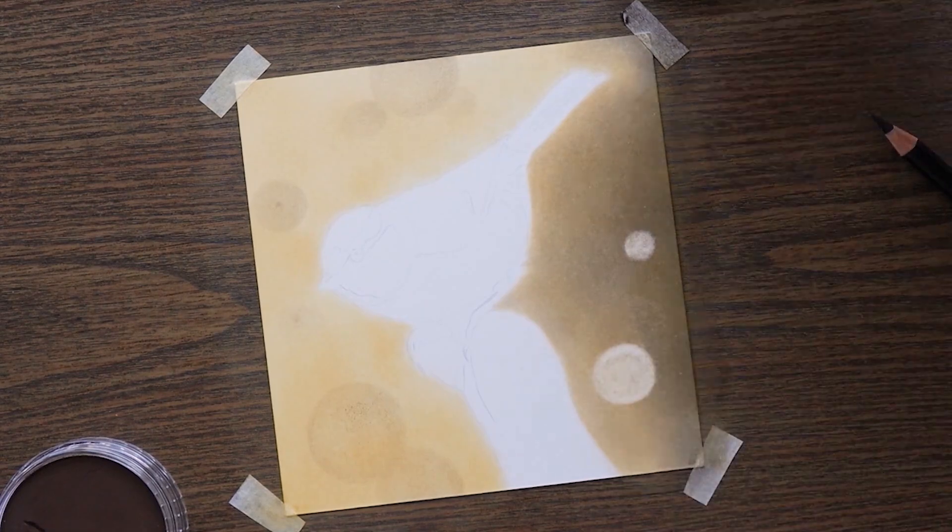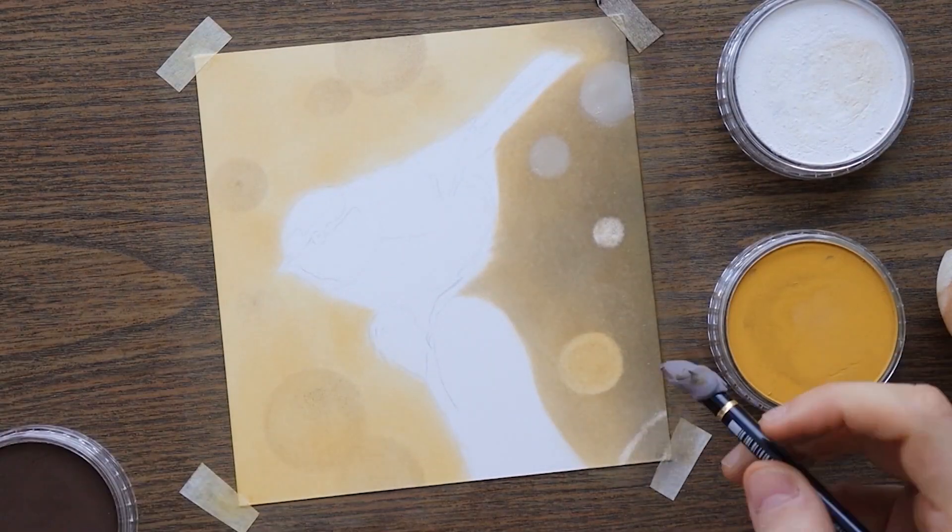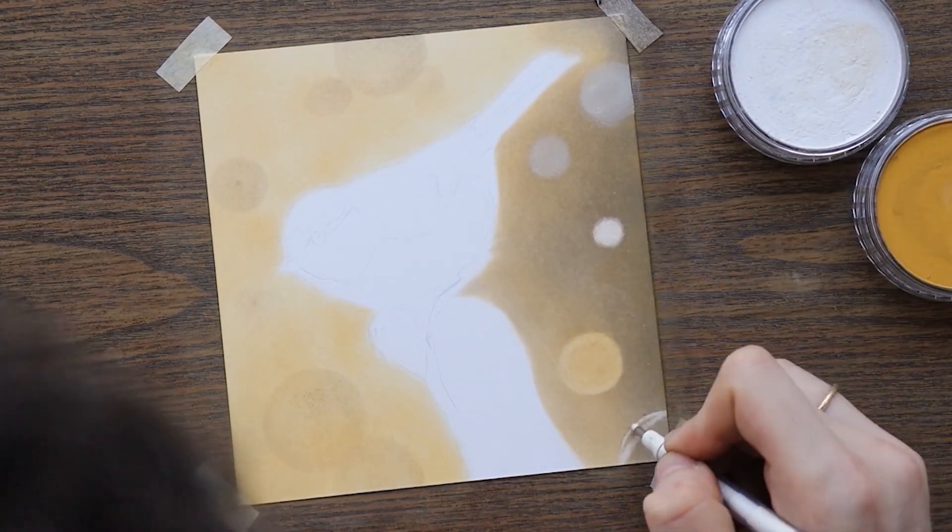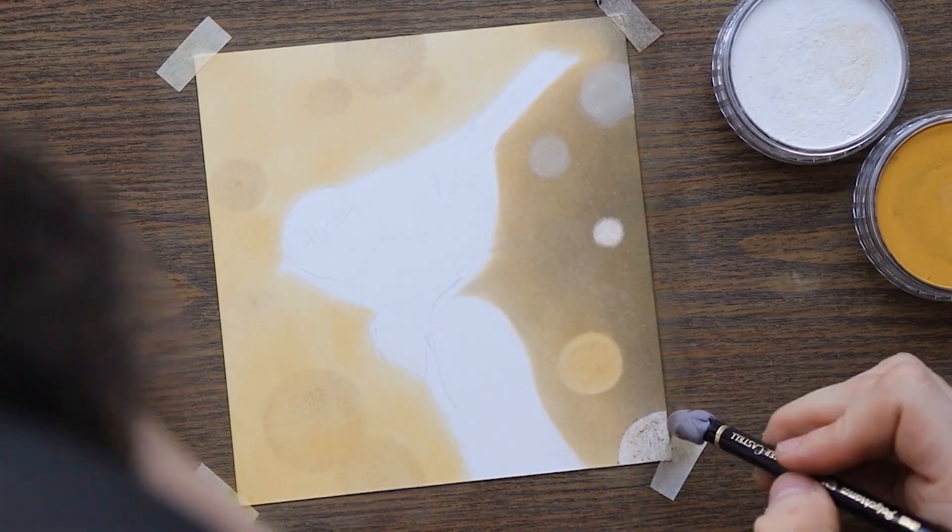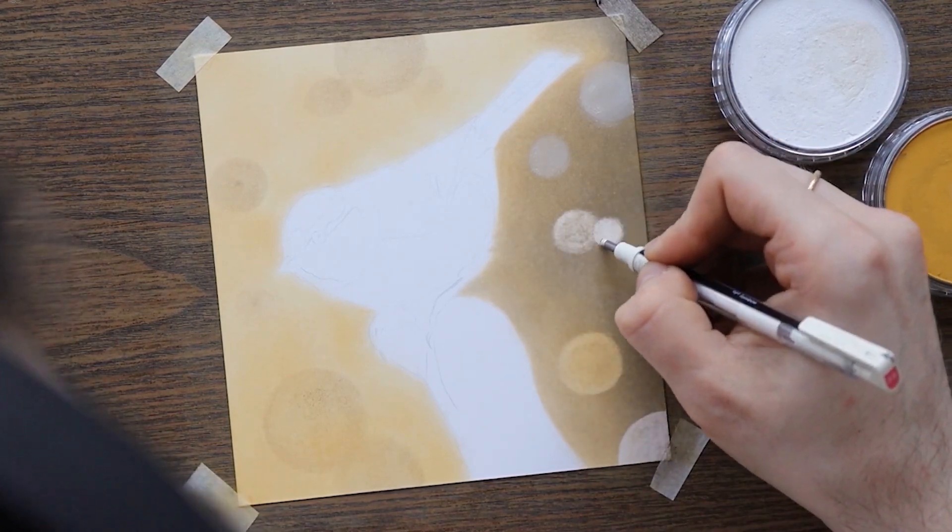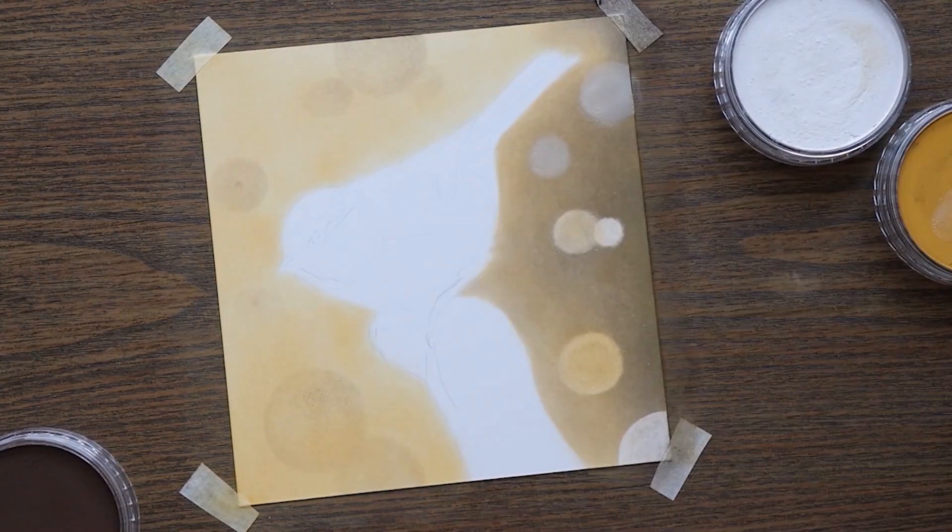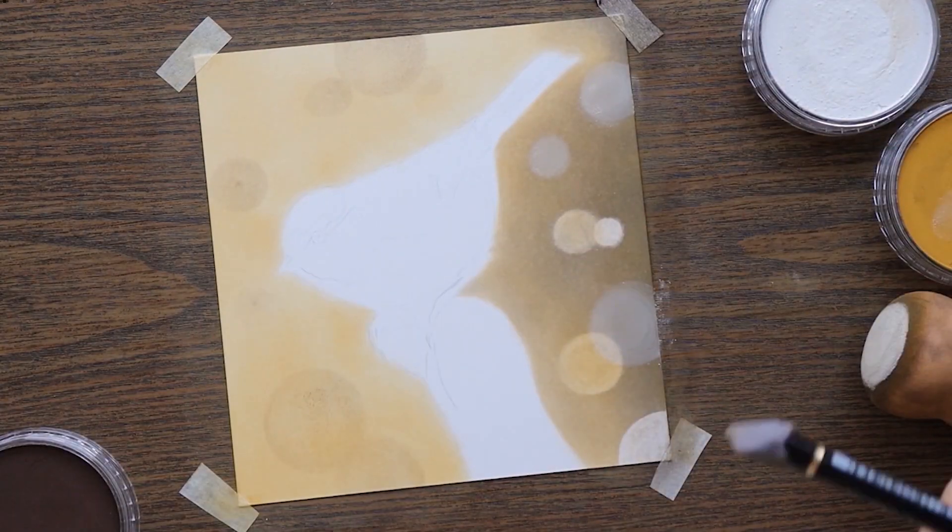After all the blending was finished I have decided to start creating the dots characteristic for the bokeh background. For the lightest ones I used the Tombow mono eraser. It works great with the pan pastels and it can almost erase them completely which is perfect when you are trying to achieve very light areas. For the less bright dots I have used a kneaded eraser just to pick out some pigment from the paper and then I applied some yellow ochre on top to make it more vibrant.